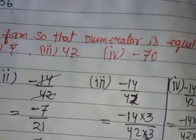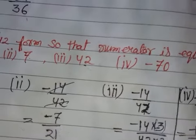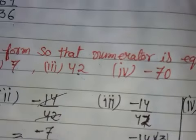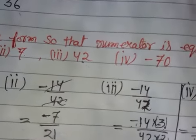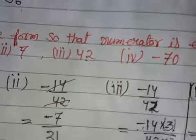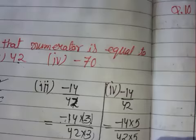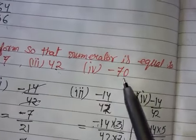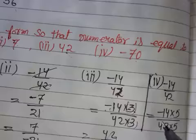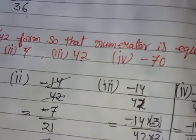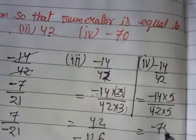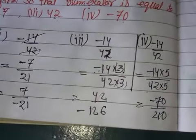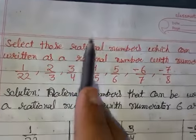We multiply by -3 or by minus 3. When we multiply by -3: negative times negative is positive, giving 42 in the numerator and 126 in the denominator. For the fourth part, numerator must be -70. Since 14 multiplied by 5 gives 70, we multiply both by 5: result is -70/210. This completes Question 8.